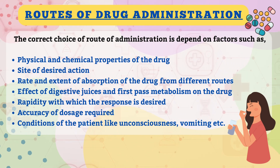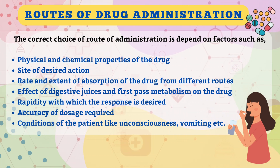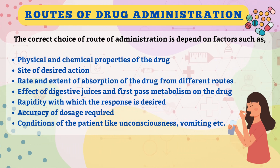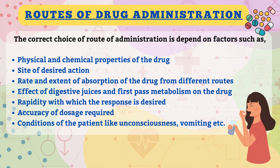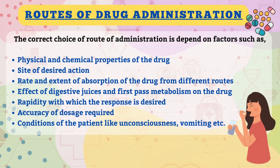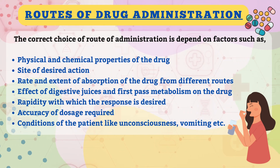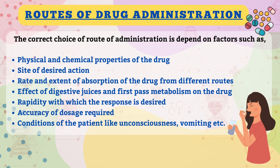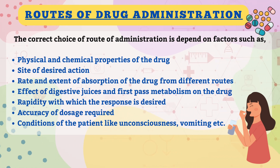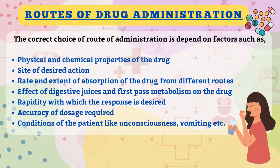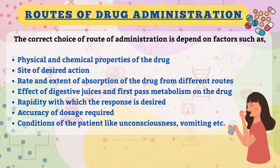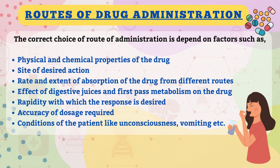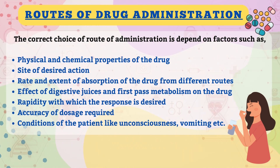Each route of administration has its advantages and disadvantages. The correct choice of route depends on factors such as the physical and chemical properties of the drug, site of desired action, rate and extent of absorption from different routes, effect of digestive juices and first-pass metabolism, rapidity with which the response is desired, accuracy of dosage required, and the condition of the patient, such as whether they are unconscious or vomiting.